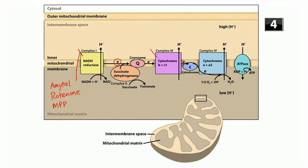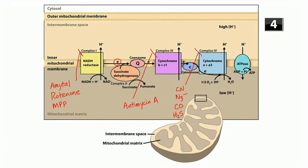Complex III can be inhibited by another fish poison called antimycin A. Complex IV is inhibited by cyanide (CN), sodium azide (N3), carbon monoxide (CO), and hydrogen sulfide (H2S). So CN, N3, CO, and H2S can all inhibit complex IV.